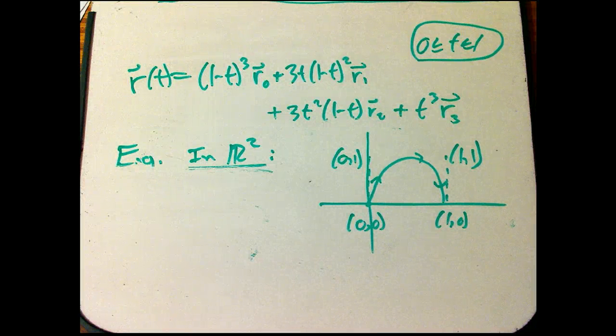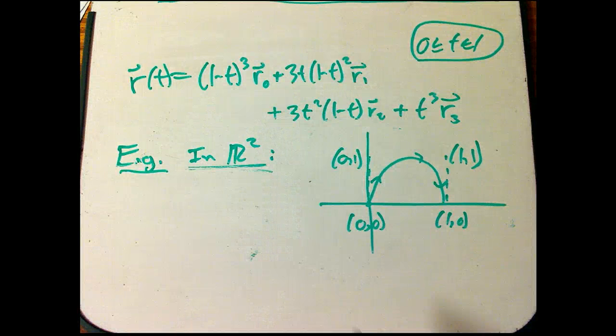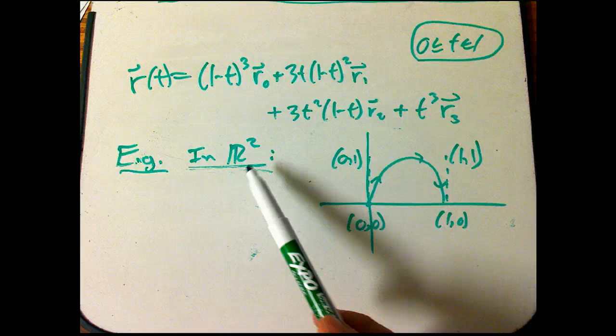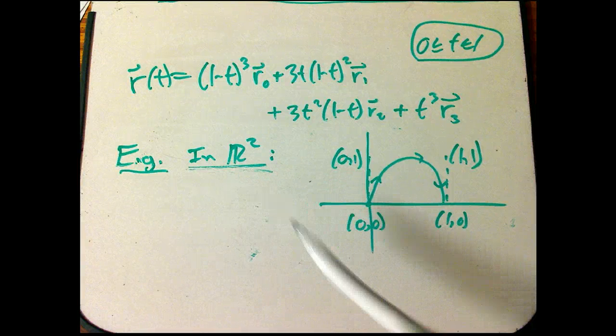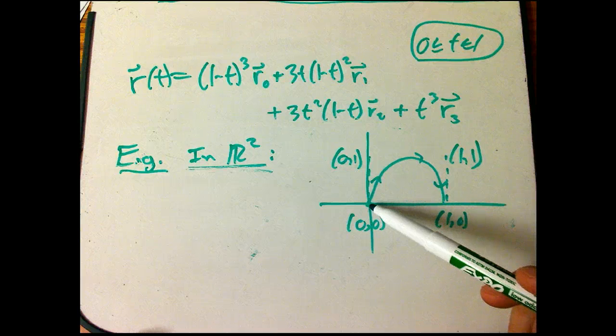All right, now let's do an example. I'm going to do an example in R2 because it's just simpler to write down. This works in any RN, and we're going to think about it in R3 for the roller coaster. And we've got a point, we've got a curve that starts at 0, 0.